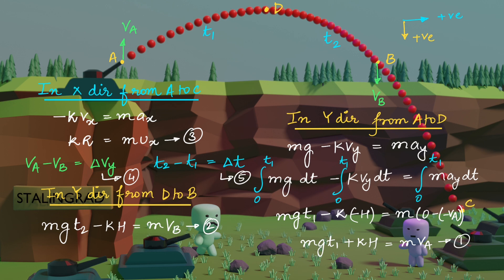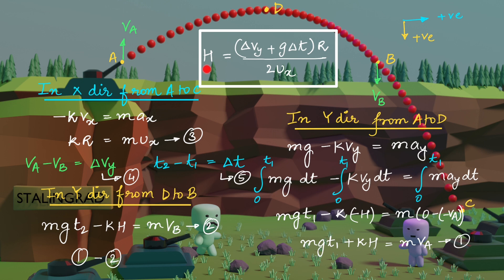Va minus Vb equals delta Vy is equation number 4, and T2 minus T1 equals delta T is equation number 5. Next, put the value of K from equation 3 into equations 1 and 2. Subtract the expressions 1 and 2 and put the value of Va minus Vb and T2 minus T1 in this expression. So from these equations, we get the value of capital H as delta Vy plus G delta T times capital R divided by 2 ux.